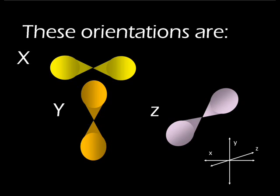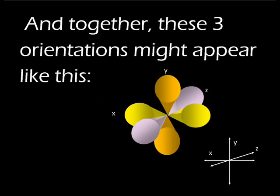The magnetic quantum number utilizes these three orientations — x, y, and z — about the center of an atom. The magnetic quantum number only applies to the p or pear-shaped orbits, and together these orientations might appear like this.